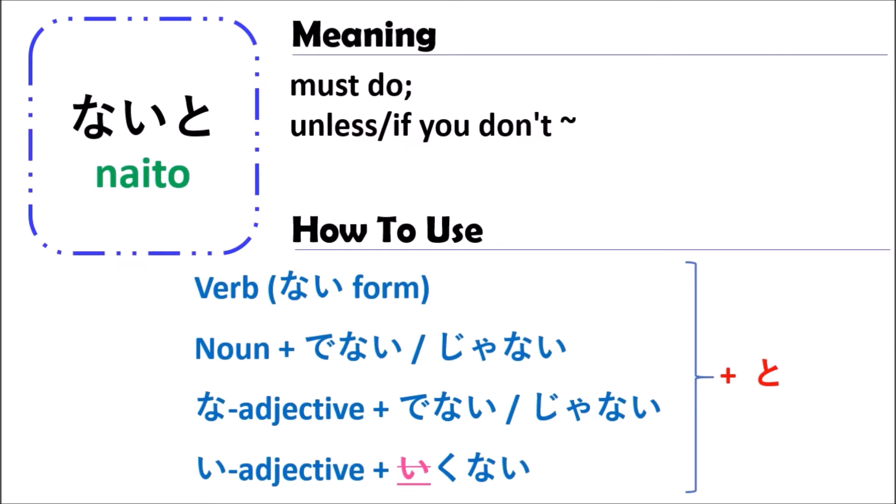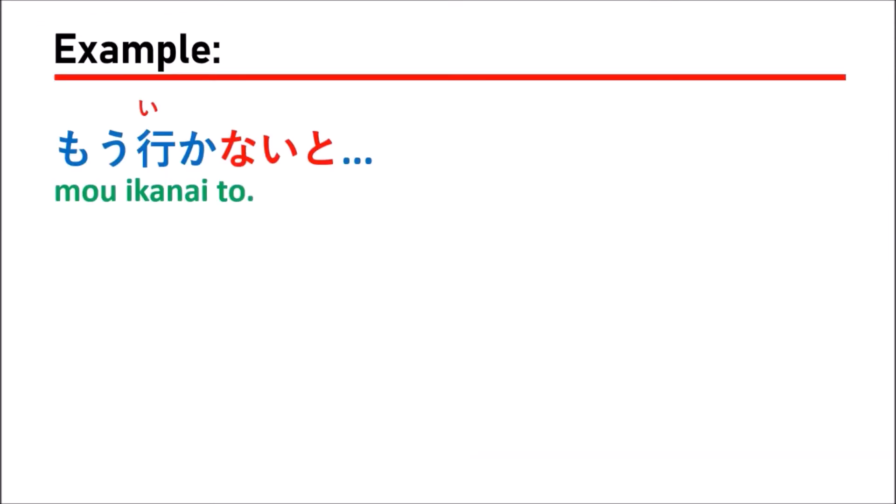The first example: mo ikanai to — this means 'I have to go now'. This means that if I don't go, I will be late, or someone will be angry with me. You will have a problem, so you have to go now.